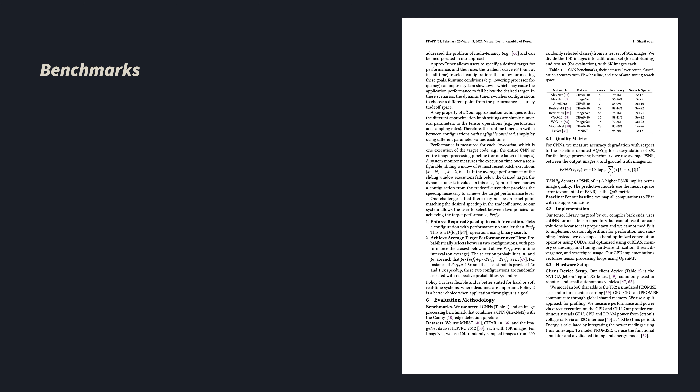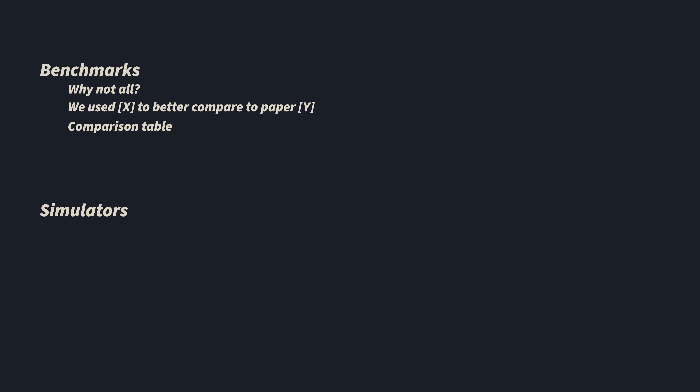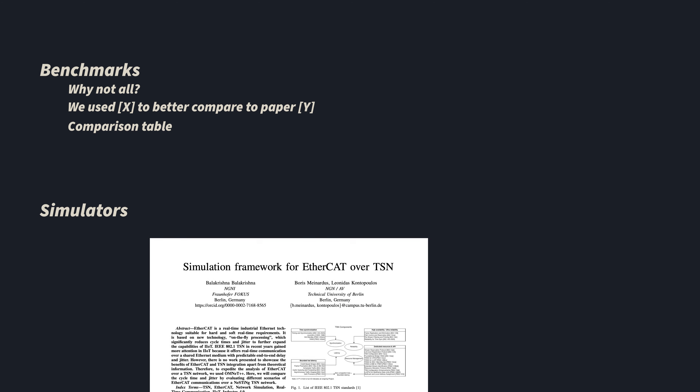The next fairly challenging but most interesting part is the experimental evaluation, where you really show off your work with the results you have achieved. This section is typically split into two parts. First, a methodology section where you explain the benchmarks you use, the simulator, the tools, and so on. With benchmarks, you have to explain why you used them — for example, you could use a standard benchmark suite for image classification, and if you didn't use all of them, explain why. You can also say you used the same benchmarks as paper X in order to better compare to it. A table with the different features can often be presented. When using a simulator, describe what simulator models you used — if it's a standard one, you can refer to its paper. The goal is that in an ideal world, everyone can reproduce your experiments.